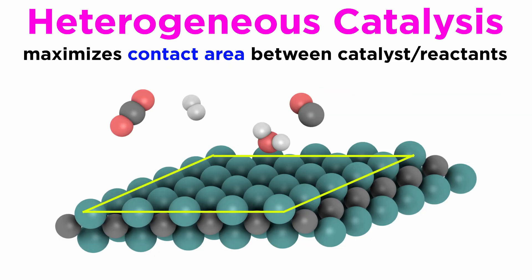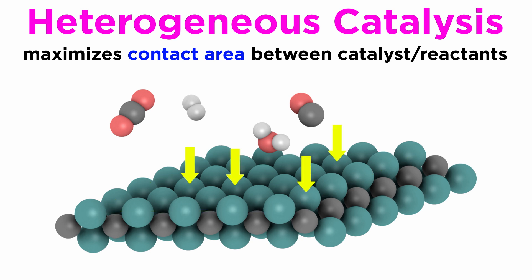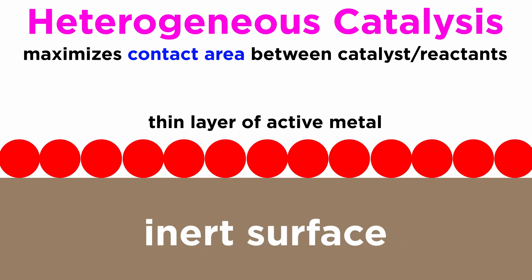An important goal of heterogeneous catalysis is to maximize the contact area between the catalytic metal and the reactants, because only the external layer of bulk metal participates in catalysis. Therefore, active metals are often deposited on an inert surface in a layer as thin as possible, so as to maximize the utilization of the precious metal. Active surfaces and inert supports can be combined in a large number of ways to produce a huge variety of potential catalysts, which are often tested empirically for a reaction of interest.